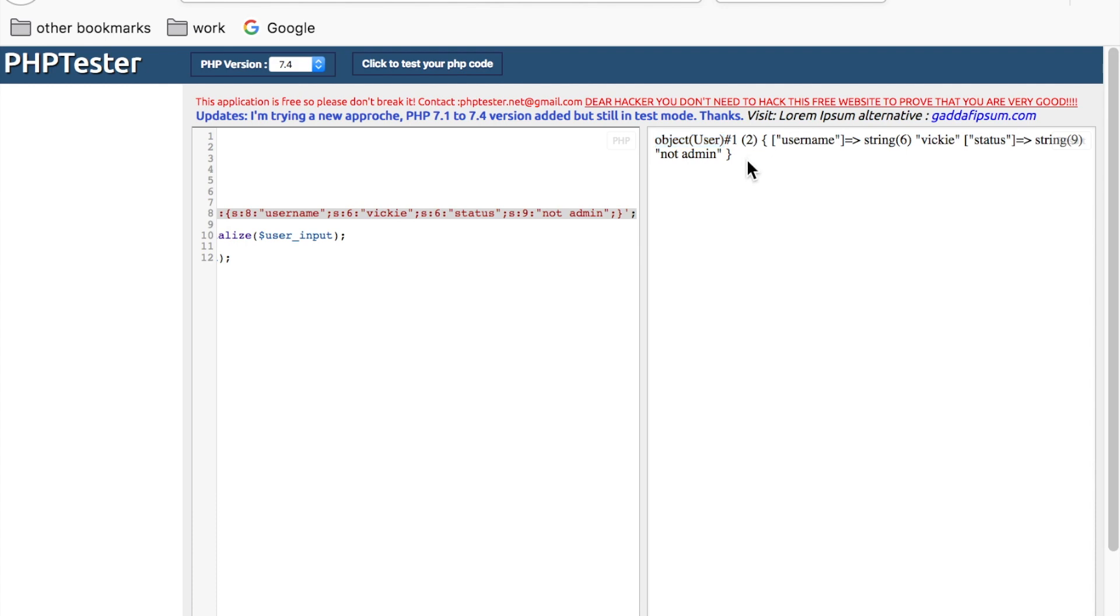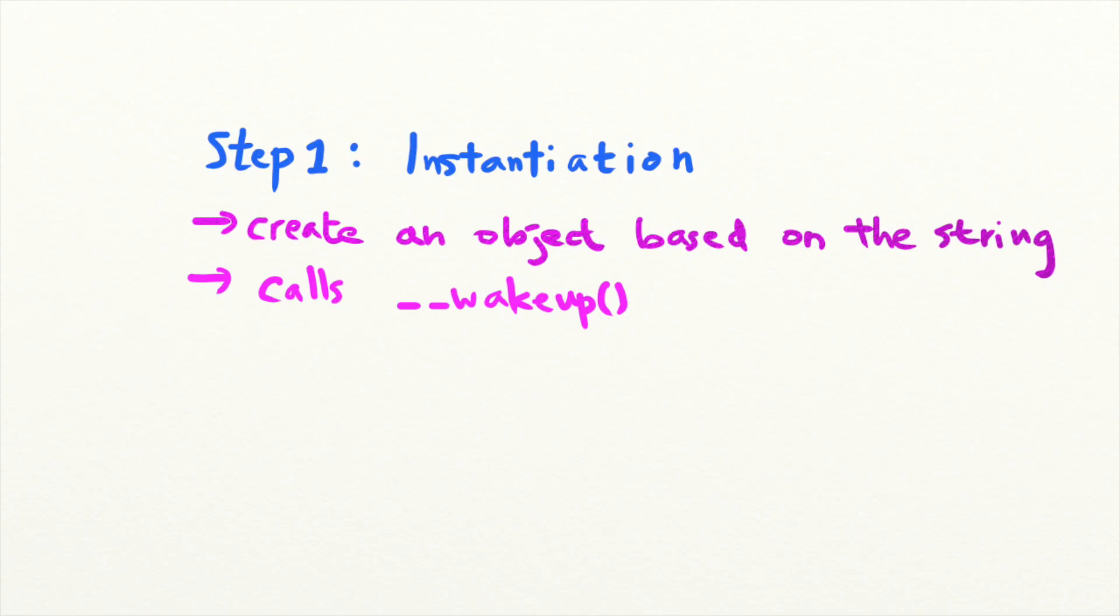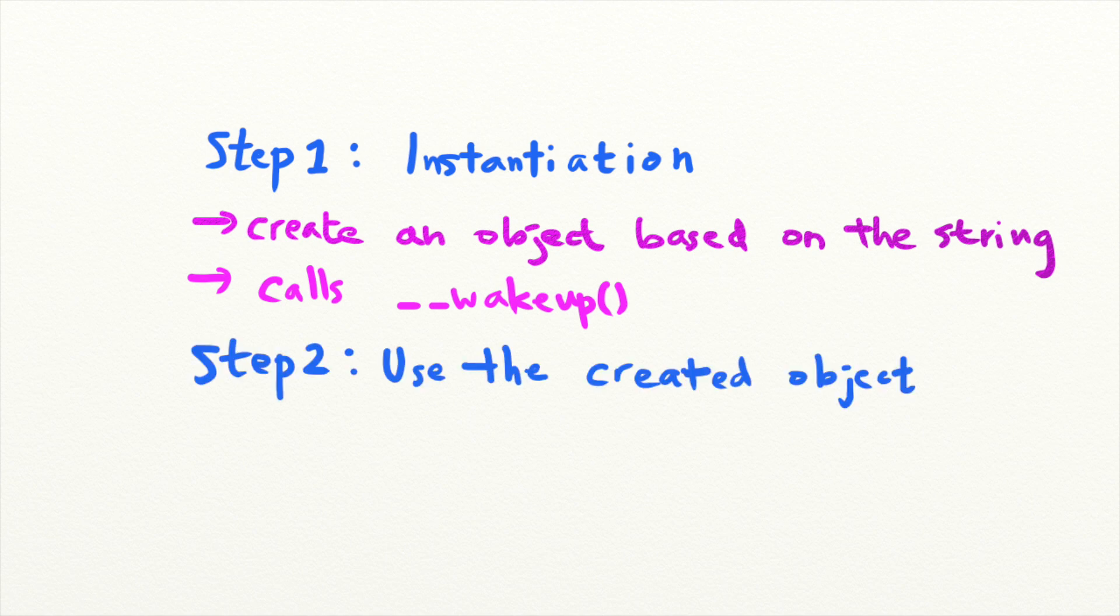It will then search for a function named wakeup and execute code in that function. Wakeup is a special PHP function name used to specify a function that reconstructs any resources during the deserialization process. It is used to re-establish any database connections that might have been lost during serialization and perform other reinitialization tasks. And then the program operates on the object and uses it to perform other actions.